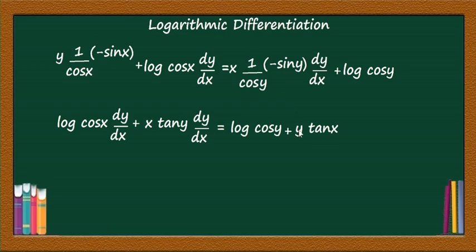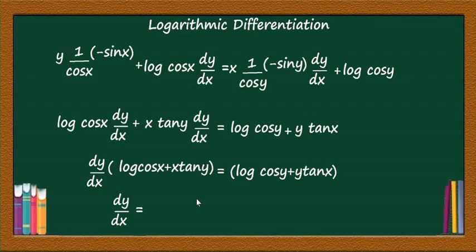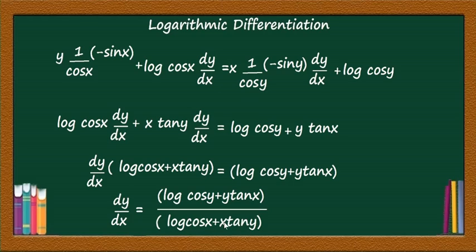Taking dy/dx common: dy/dx·(log cos x + x·tan y) = log(cos y) + y·tan x. Therefore, dy/dx = (log cos y + y·tan x) / (log cos x + x·tan y). This is the method of solving this question.